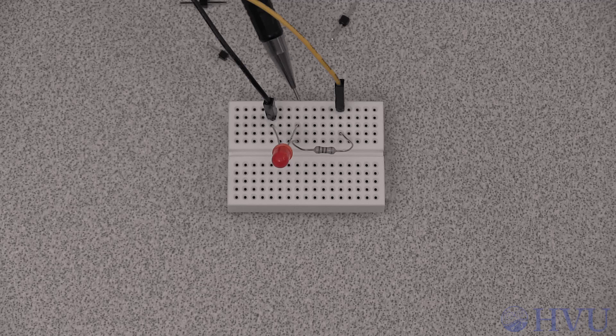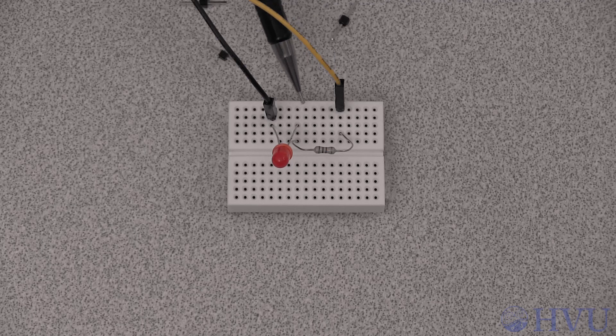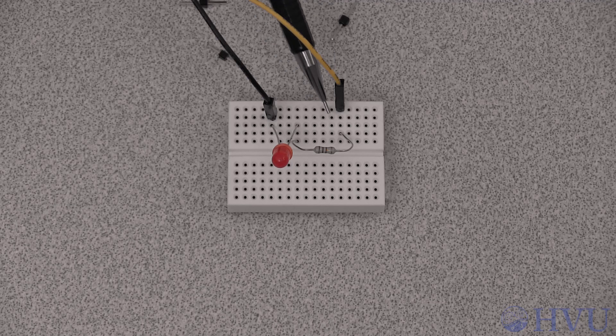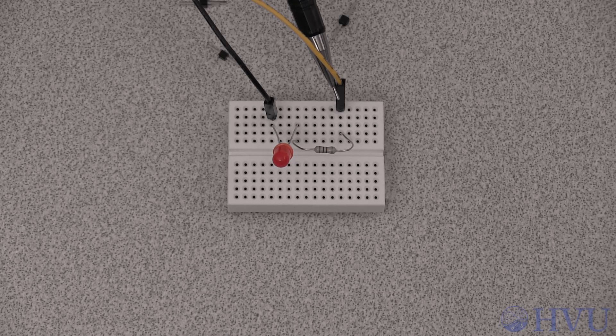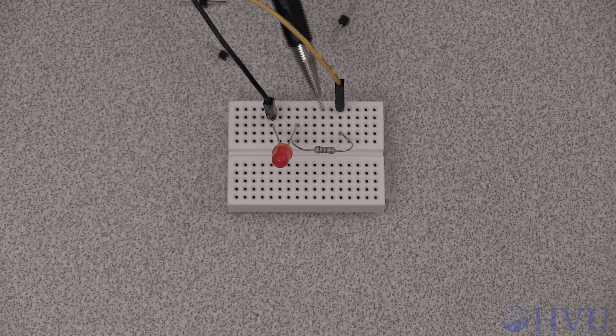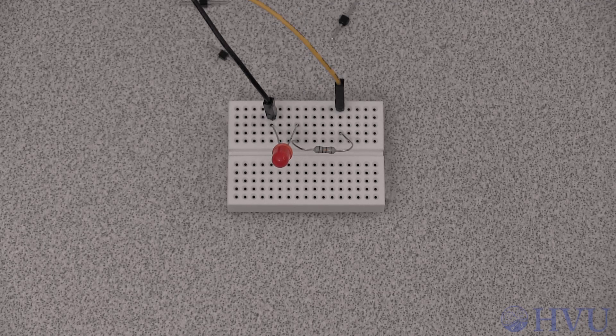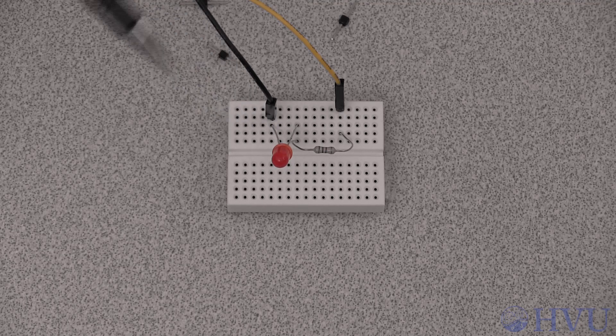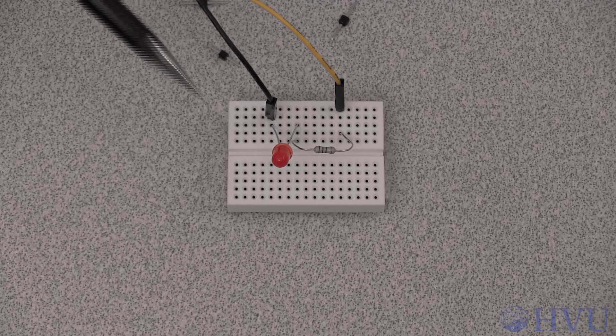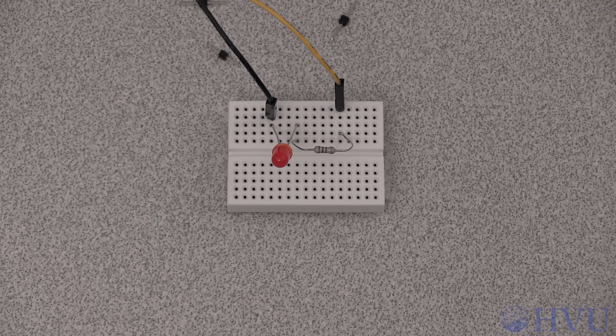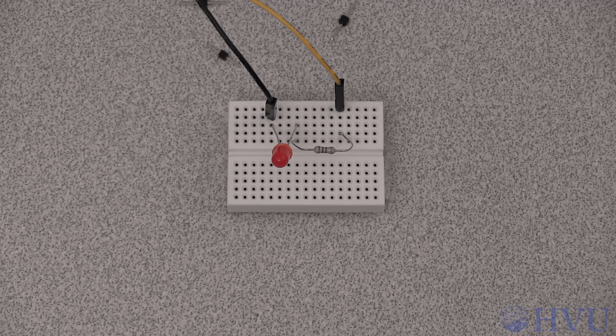This is the circuit we'll use for this example. The applied voltage is provided by channel 1 of the waveform generator, this yellow wire. This is a 100 ohm resistor and this is an LED. Ground is connected here to complete the circuit. Now let's apply some time varying voltage to the LED with our waveform generator.